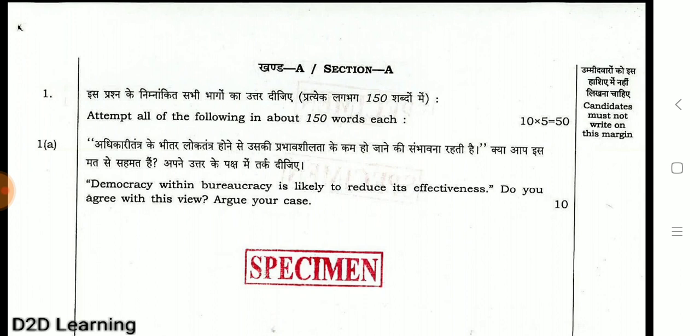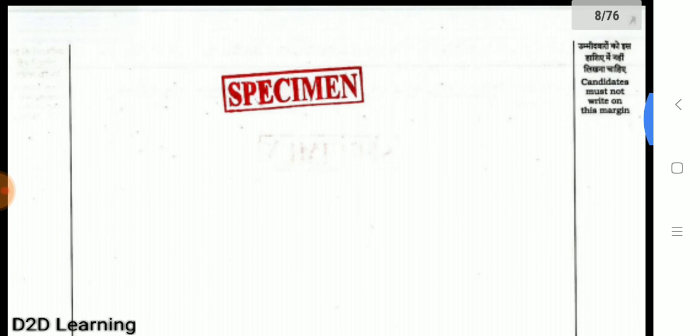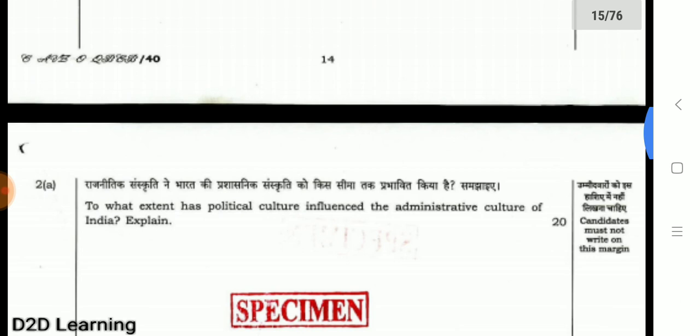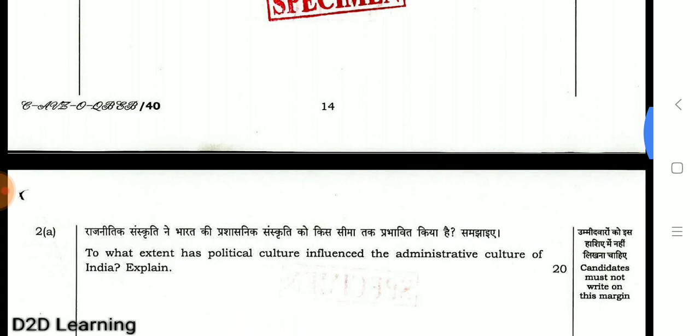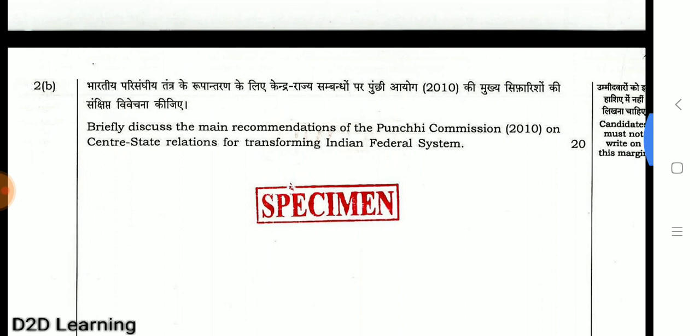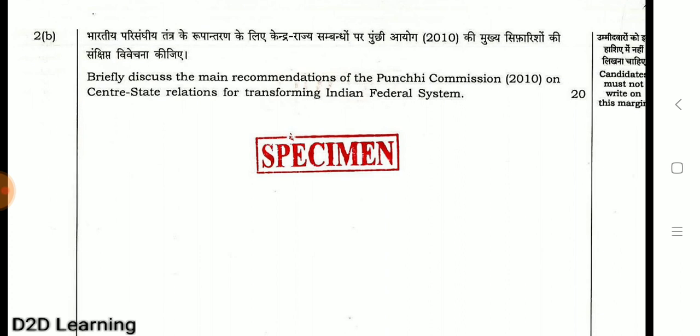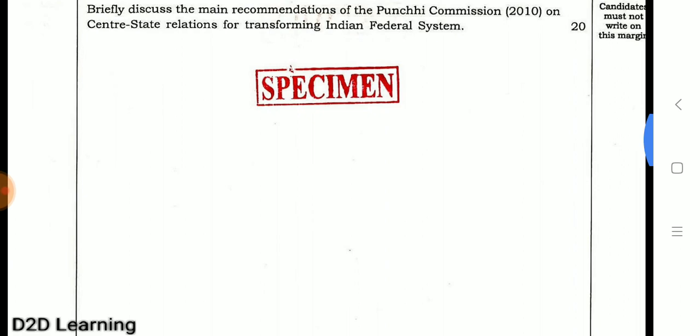For the first question, you will have 150 words. This is compulsory. For a 10-mark question, answer in about 150 words; for a 20-mark question, answer in about 250 words. For a 20-mark question you can write 300 to 350 words. That word limit is based on you. So for 2B, 2C — this is the total question paper format.